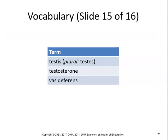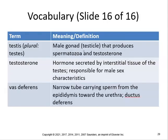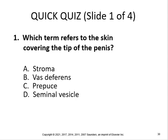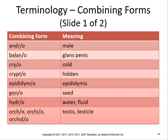The testes are the male gonads, equivalent to the female ovaries, producing spermatozoa and testosterone. Testosterone is the hormone secreted by interstitial tissue of the testes responsible for male sex characteristics: deeper voice, muscles, beard, and facial hair. The vas deferens is the narrow tube carrying sperm from the epididymis toward the urethra. In combining forms: andro- means male (as in androgen); balan- refers to the glans penis, so balanitis is inflammation of the glans penis.